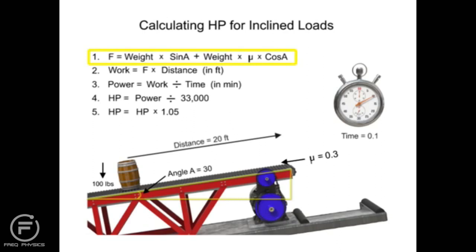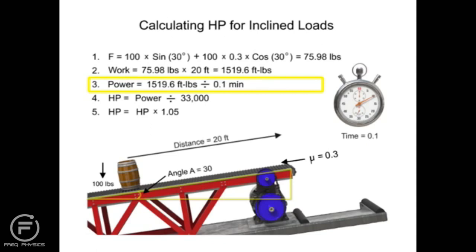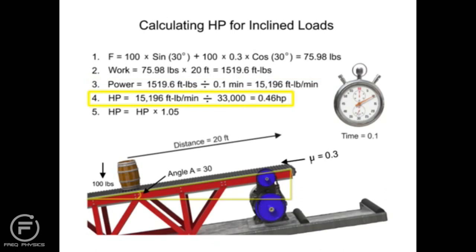First, find the total force required by adding the force to raise the load to a higher elevation with the force to overcome friction. In this system, the horizontal force is 75.98 pounds. Then determine the work: 75.98 × 20 feet = 1,519.6 foot-pounds. Next, calculate the power: 1,519.6 ÷ 0.1 minutes = 15,196 foot-pounds per minute. Convert to horsepower: 15,196 ÷ 33,000 = 0.46 horsepower. Finally, add 5% for friction losses. The final result is 0.48 horsepower, ensuring system designers can select the right motor to operate the conveyor on an incline.